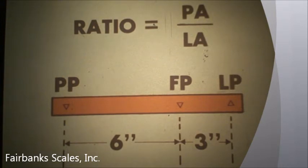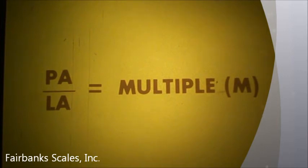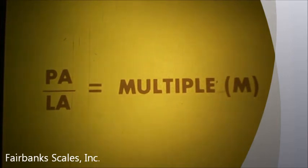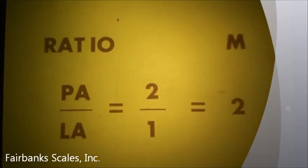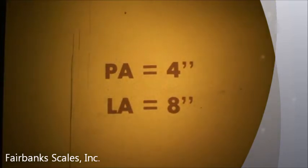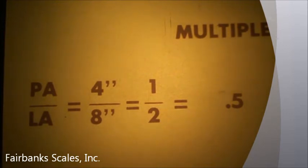With a power arm of six inches and a load arm of three inches, the ratio is six over three, or two to one. Use the ratio of a lever to find its multiple, abbreviated M. If a lever has a ratio of two to one, we say it has a multiple of two. A lever with a power arm of four inches and a load arm of eight inches would have a ratio of four divided by eight, or one divided by two, and a multiple of 0.5, or one half.